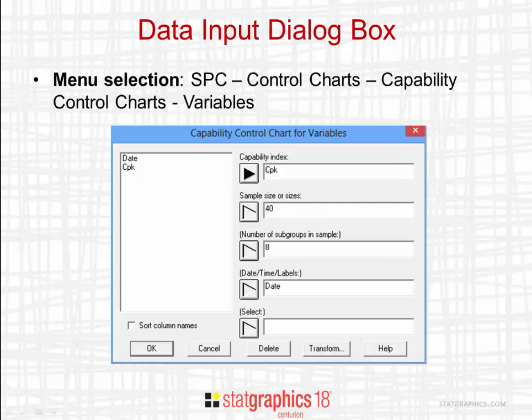You'll then see the data input dialog box. In the field labeled Capability Index, put the name of the column containing the indices to be plotted. In the field labeled Sample Size or Sizes, put a single number if all the indices are based upon the same size sample. Otherwise, put the name of a column containing the sizes associated with each value of the index.